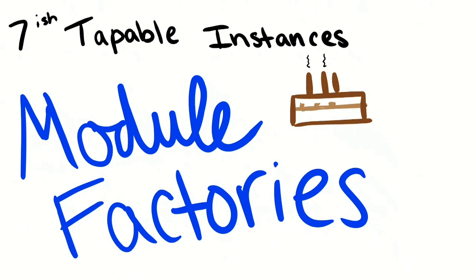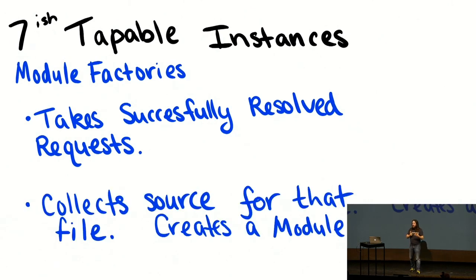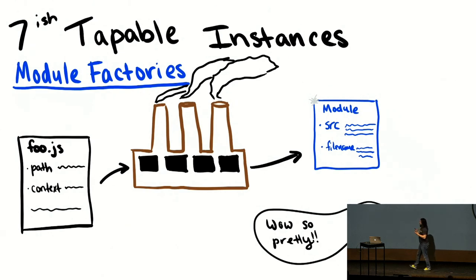And then, finally, module factories. Who has ever written Java in their life? You know what a factory is. It's something that returns an object or an instance, right? In this specific case, we take a successfully resolved request, we collect the source for that file, and then we create a module object out of it. And that's why we call it a module factory. If we were to have a representation of this drawn, you're taking this file with some information you know now, you pass it through the factory, and out comes this object, this module class, or instance. Wow, it's so beautiful.